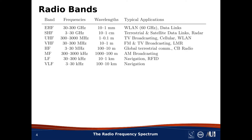Just as we divide the EM spectrum into bands, we divide the radio band into smaller bands. There are a number of ways to do this, and I'm going to show you two popular schemes. The table I'm showing you now divides the radio spectrum into bands over which the frequency varies by a factor of 10. For example, EHF — the top of this table — means Extremely High Frequency, and refers to frequencies from 30 GHz up to 300 GHz. That corresponds to wavelengths of 10 mm down to 1 mm.